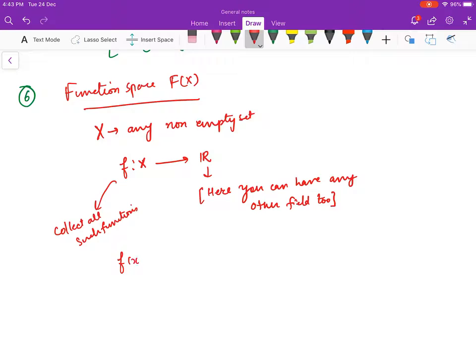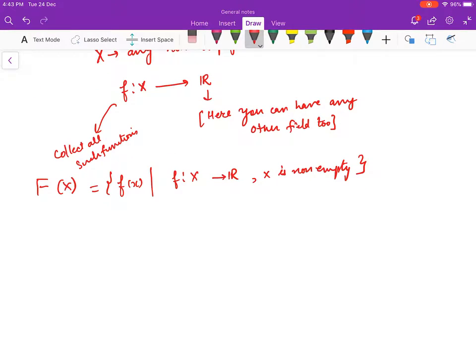You have a space F(X) where f is from X to R and X is non-empty. We denote this set as capital F over X. The claim is that F(X) forms a vector space over R.